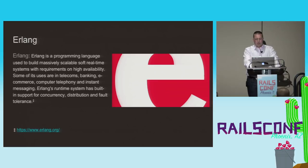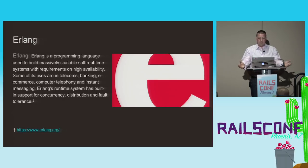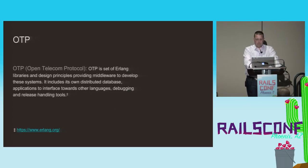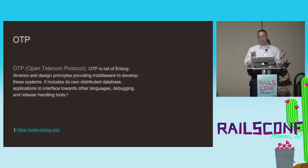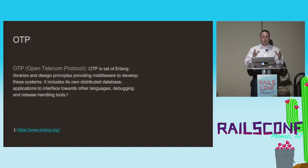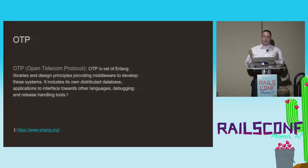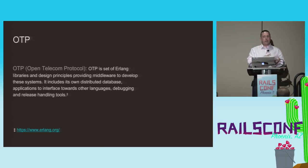Erlang has a somewhat different syntax that bears some similarity to Prolog, and it's used by a number of companies in production — Ericsson and WhatsApp among the more well-known. The OTP, or Open Telecom Protocol, is not quite a full-fledged framework. It's more a collection of Erlang libraries and design choices that create applications offering a distributed, highly available, supervised, and failure-resistant runtime.